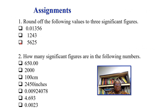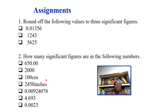Assignments: round the following values to three significant figures: 0.01356, 1243, and 5625. Also, state how many significant figures are in each of the following: 650.00, 2000, 100 cm, 2450 inches, 0.00924078, 4.693, and 0.023.